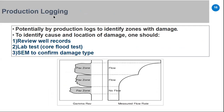The last diagnostic tool is production logging (PLT). By PLT we can identify zones with damage. For example, if gamma ray shows three zones but the PLT measured flow rate shows no flow in one zone, that zone may be damaged. We should review well records, run lab tests, and use scanning electron microscopy to confirm the damage type.